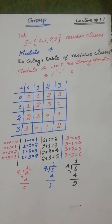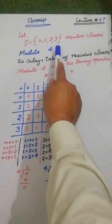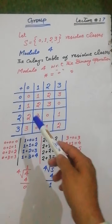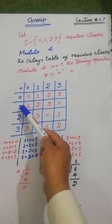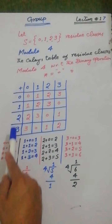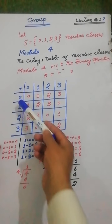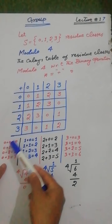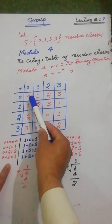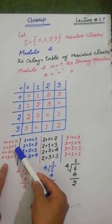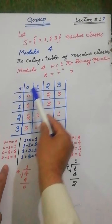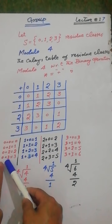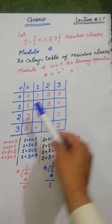The next example of a group: let the set S contain the elements 0, 1, 2, 3 — residue classes modulo 4. The Cayley table of residue classes modulo 4 with respect to the binary operation addition is shown. Operating the element 0 with each element of S: 0+0=0, 0+1=1, 0+2=2, 0+3=3, all results less than 4.